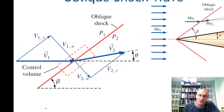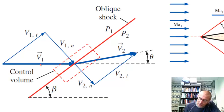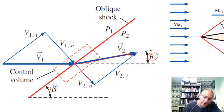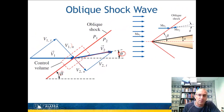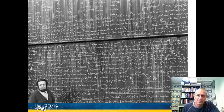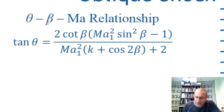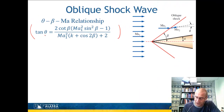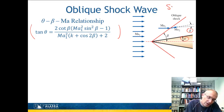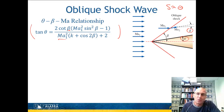This turns into a geometry problem. The upstream velocity V1 has a normal component depending on beta, and the downstream V2 has a normal component depending on both beta and delta. The theta-beta-Mach relationship — derived from this geometry — relates the turning angle theta, upstream Mach number, and shock wave angle beta. Note: the correct equation uses cotangent of beta at the top. This relationship is also plotted, with theta on the y-axis and beta on the x-axis, making it easier to use graphically.